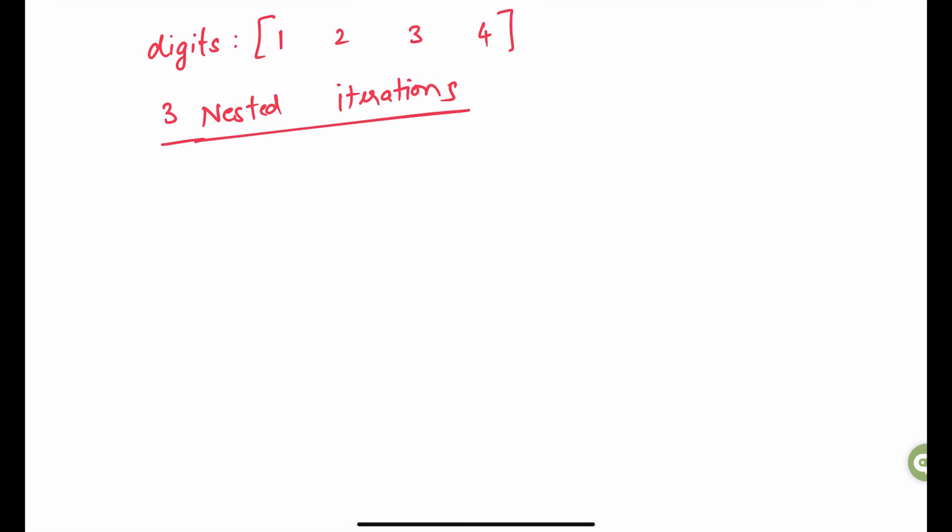The simplest way to solve this problem is using 3 nested iterations where the first iteration will help us determine the digit in the 100th place of the number, the second will determine the digit in the 10th place and the third will be the digit in the units place.